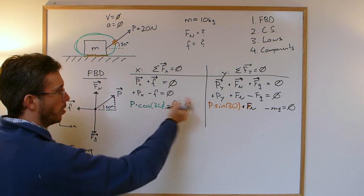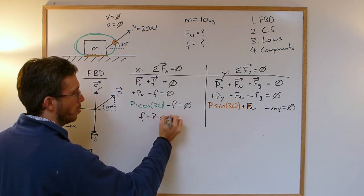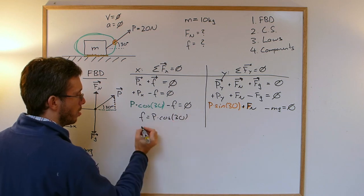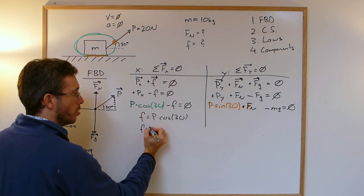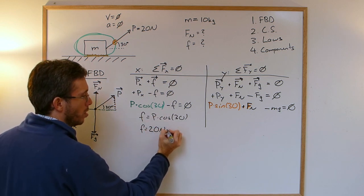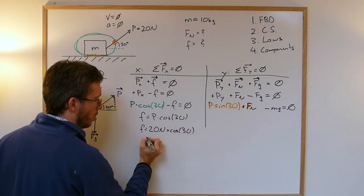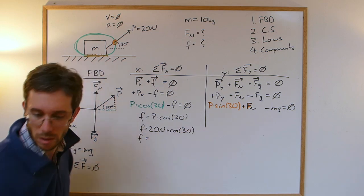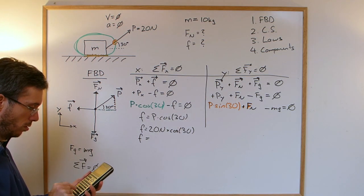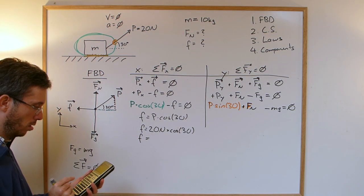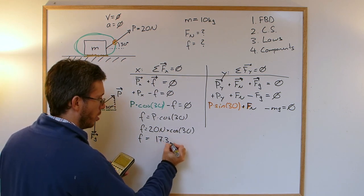Now I can solve. So friction on the other side. So friction must be push times cosine of 30. So friction is... my push was 20 N. 20 N times cosine of 30, which gives me 17.3 N.